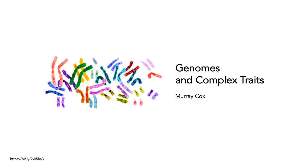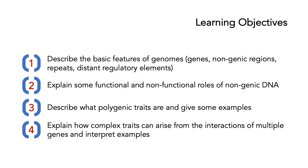In this fourth presentation, we're going to be talking about genomes and complex traits. Today we're going to have four learning objectives. The first is to describe the basic features of genomes, such as genes, non-genetic regions, repeats, and distant regulatory elements. Second, we're going to explain some functional and non-functional roles of non-genetic DNA. Third, we're going to describe what polygenic traits are and give some examples. And fourth, we're going to explain how complex traits can arise from the interactions of multiple genes and interpret some examples.